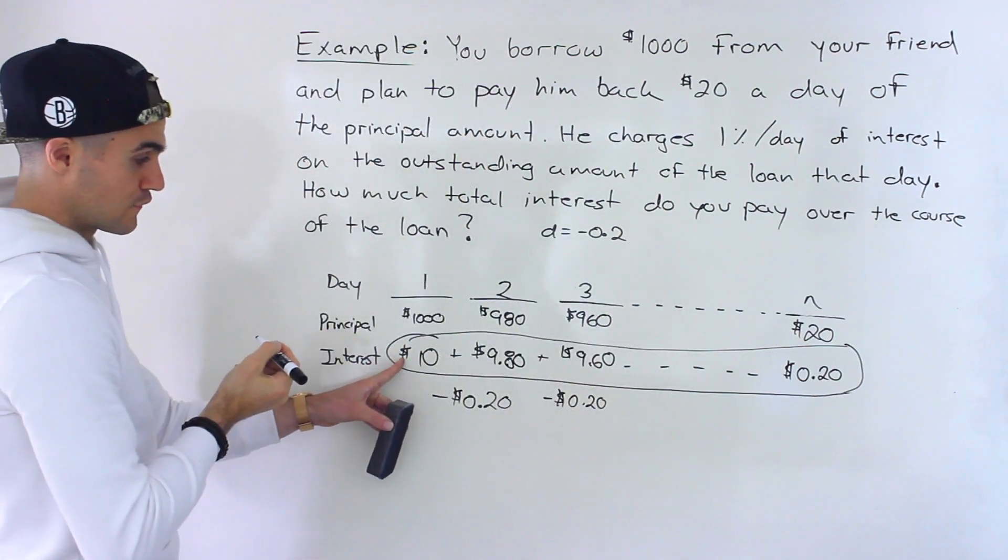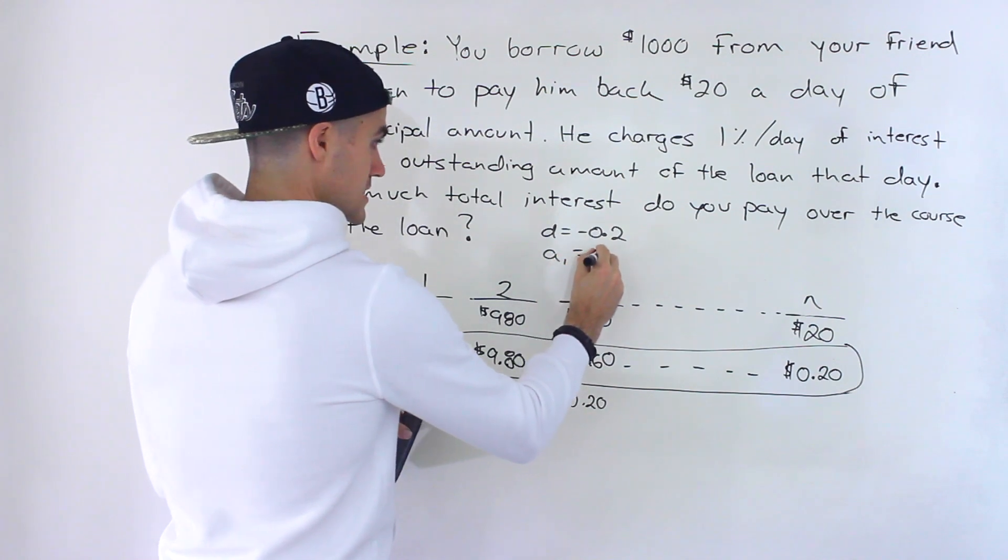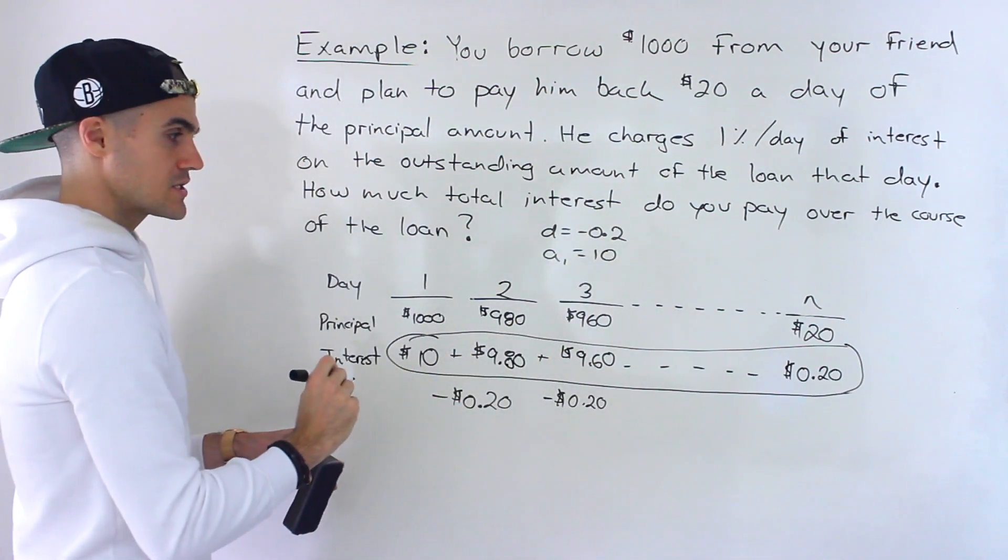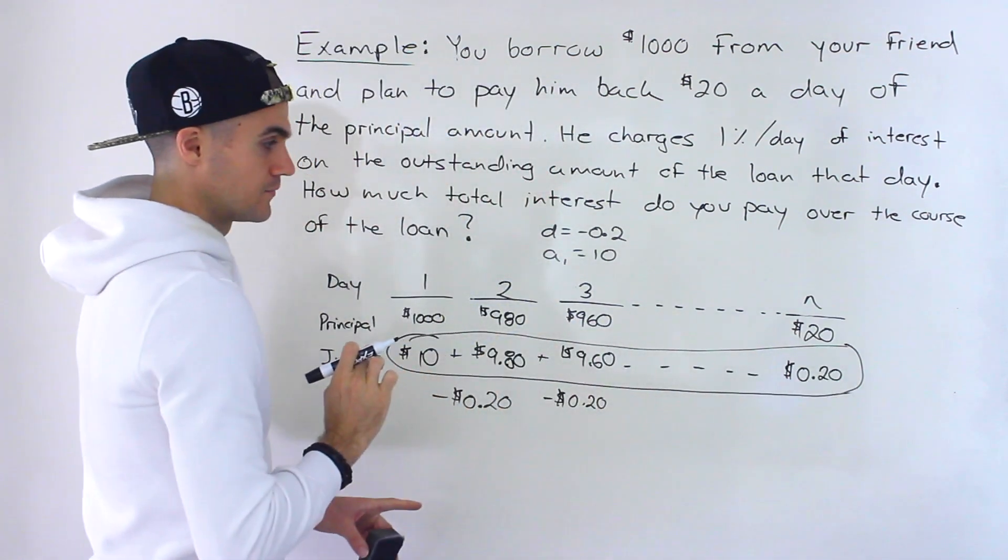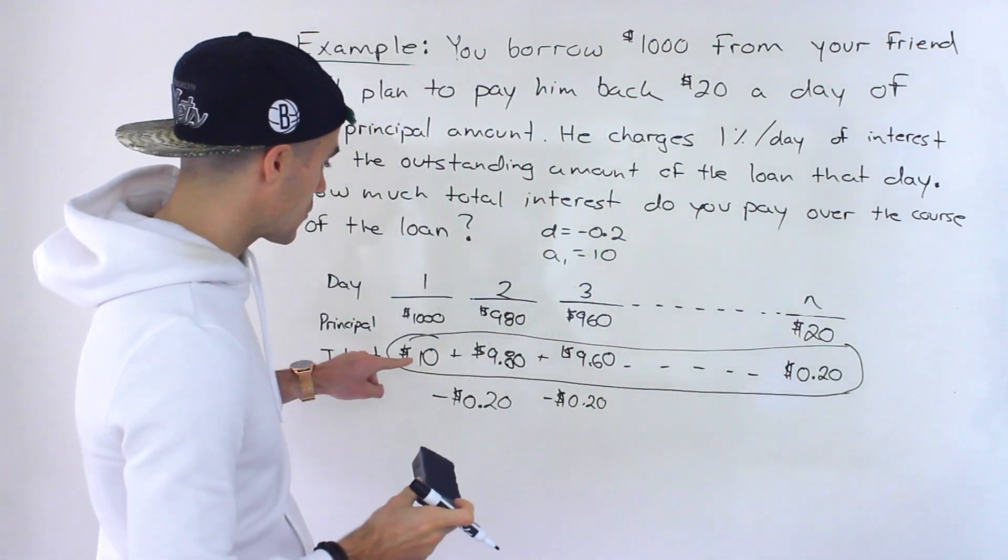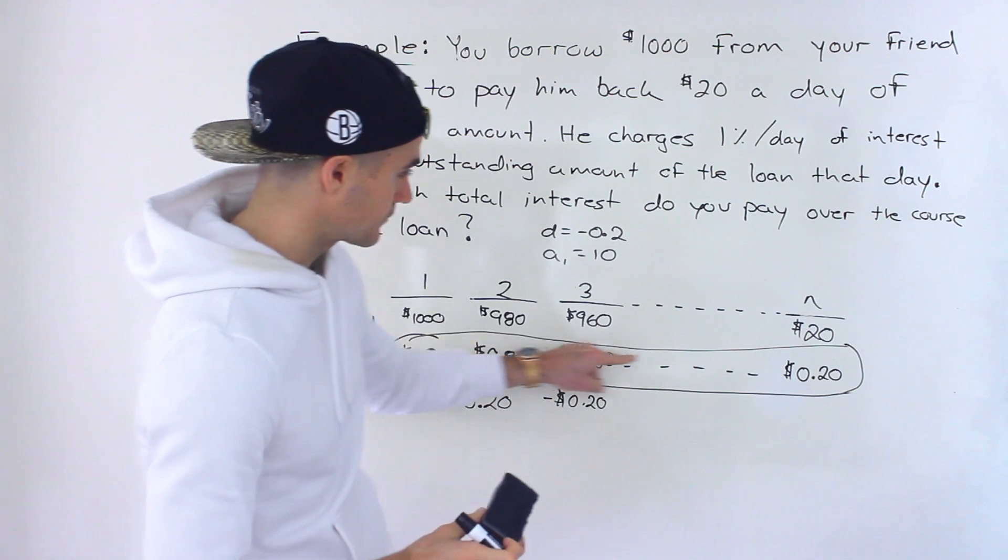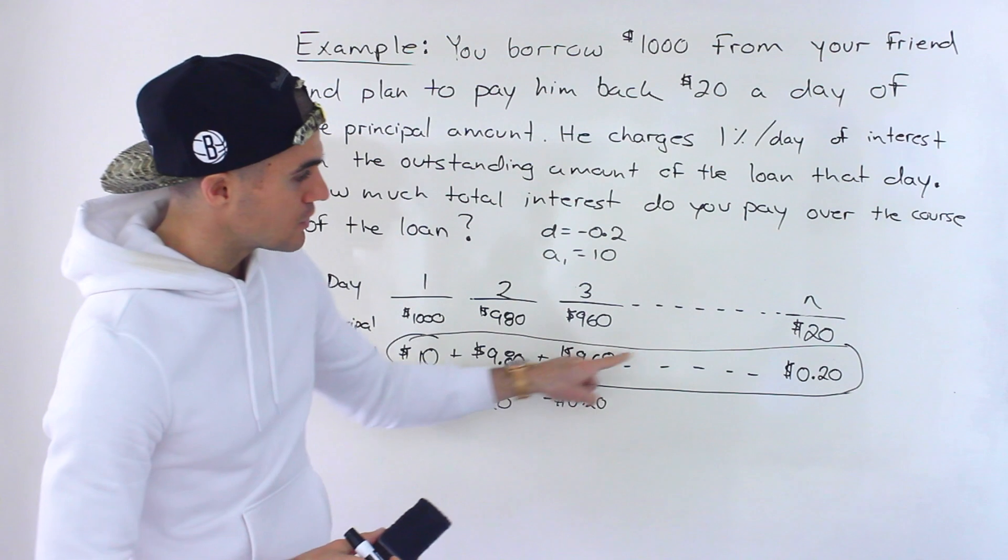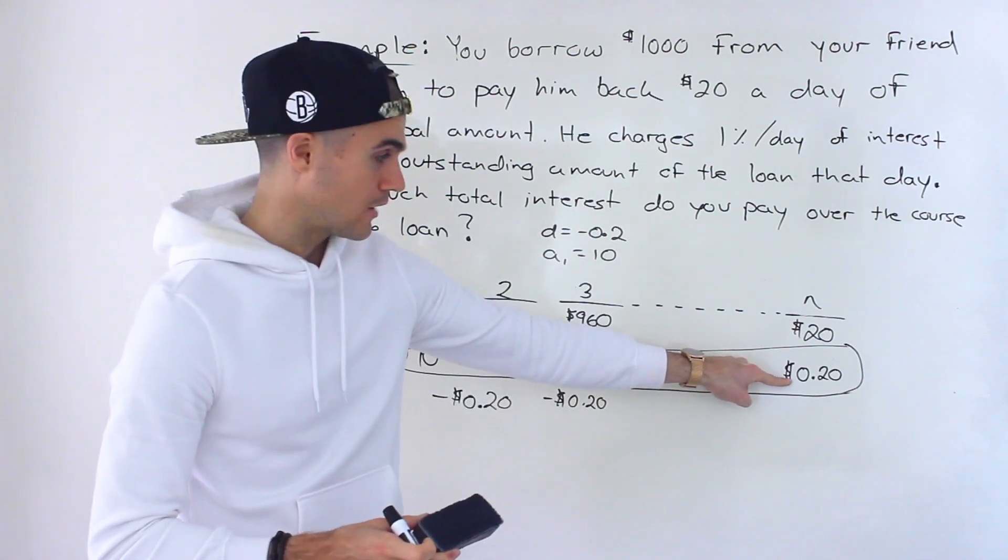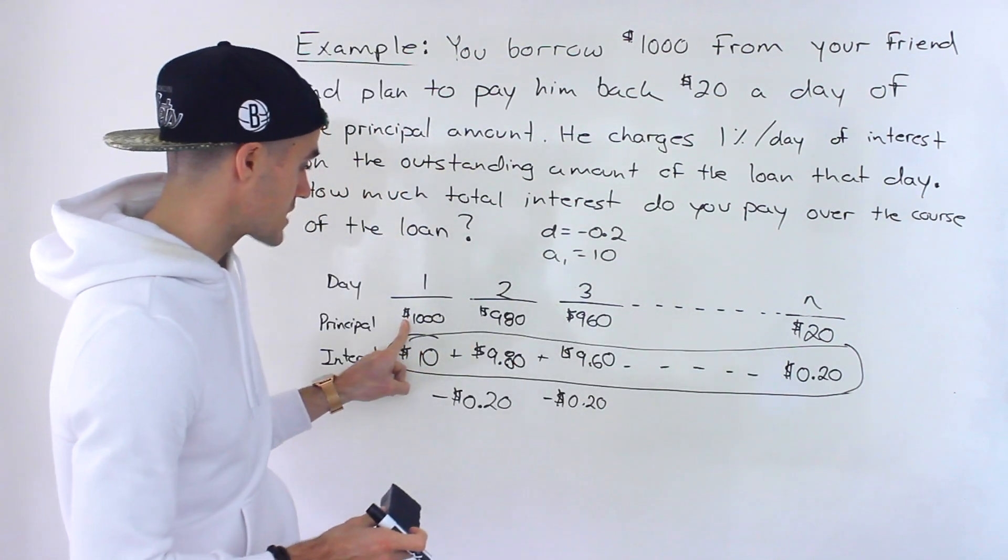The first value, a₁, is equal to 10. And then we just have to figure out how many of these are there. And we can actually do that either with this over here. If you list out all these values, 10, 9.80, 9.60, all the way to 0.2, that's an arithmetic sequence. Or you could do with these as well.